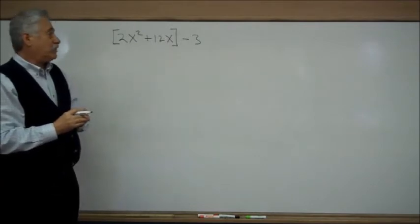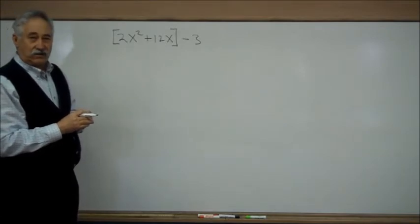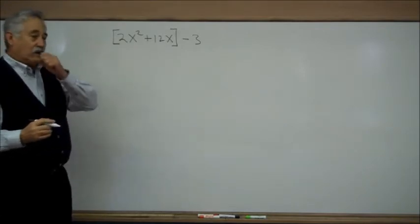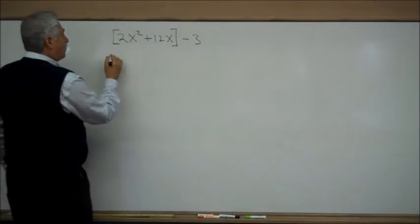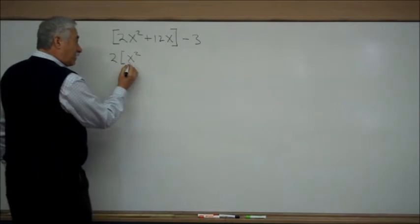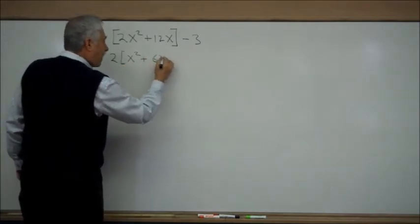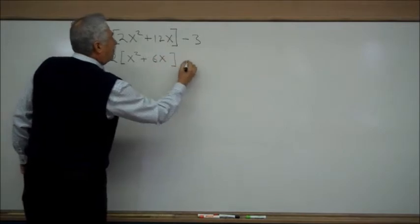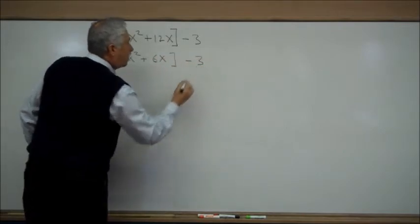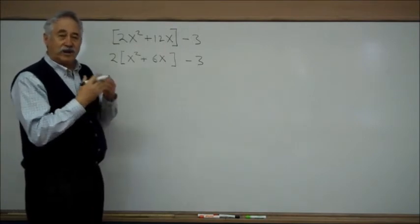Step two in preparation is to factor out the quadratic coefficient, called the lead term. So we factor out a 2, so that we have a 1x² and then we'll have a 6x in the bracket. Minus 3 is outside the bracket, and it's going to stay there as an orphan for the completing the square step.